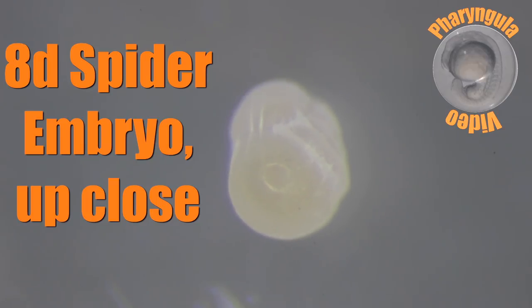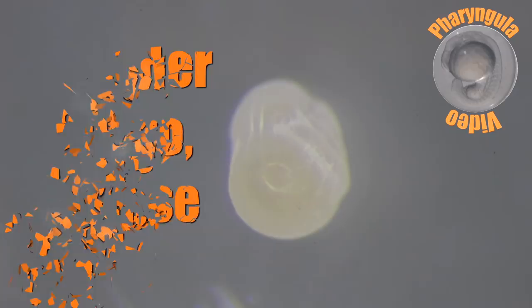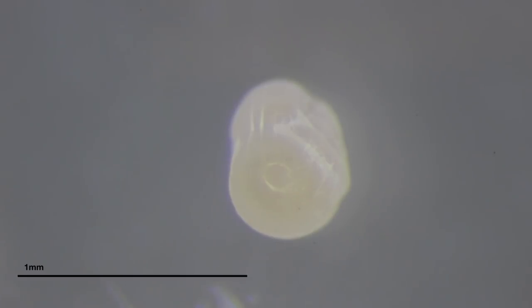And you can sort of see it's an incipient spider at this point. So it's no longer just a featureless ball. You can actually see hints of the pedipalps. You can see the legs forming along the side.